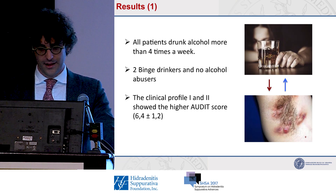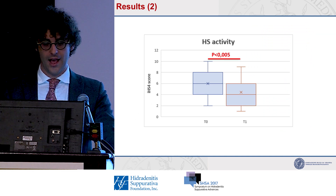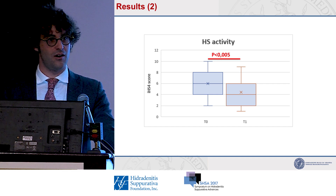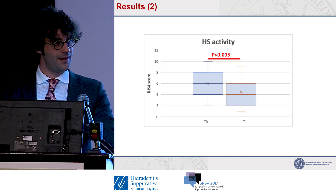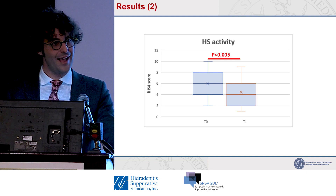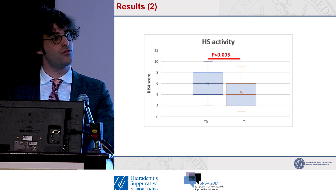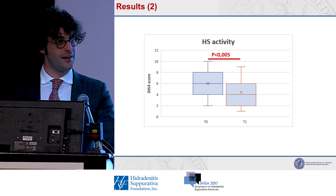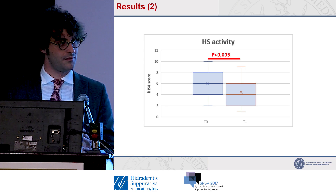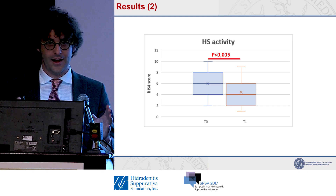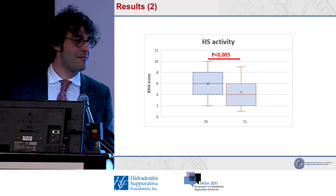By analyzing these phenotypes, we found an increase in the international HS4 dynamic score only in those patients. This means that alcohol has a higher impact in patients with mild disease. In patients with a high contribution of auto-inflammation, external factors like alcohol may be less important. We therefore need to concentrate our educational efforts on these patients with mild disease, at least based on this pilot study.